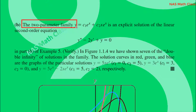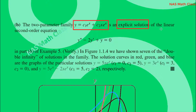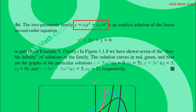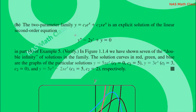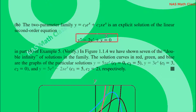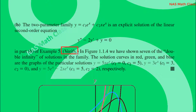This is the two-parameter family: y = c1·e^x + c2·x·e^x is an explicit solution of the linear second-order equation. Since it is a second-order equation, we have two parameters c1 and c2. We need to verify that this solution satisfies the differential equation.